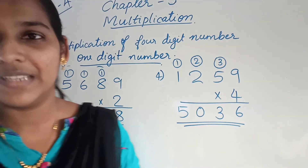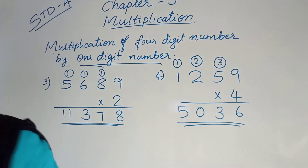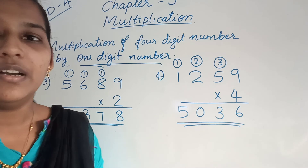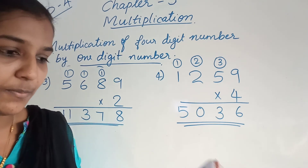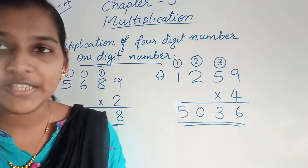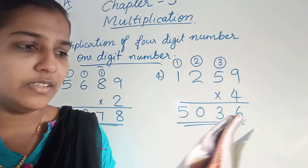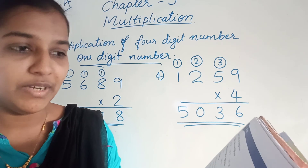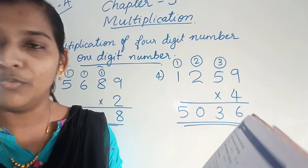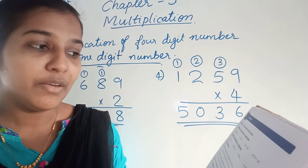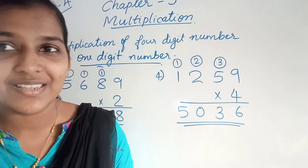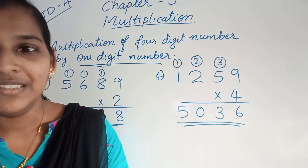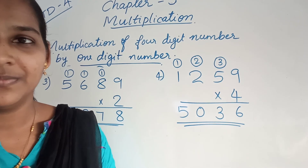This is the way to multiply a 4-digit number by a 1-digit number. Now there are some questions in your textbook on page number 56, question number 2: Multiply a 4-digit number by a 1-digit number. There are parts A, B, C, and D — 4 parts. Everyone answer all those questions in your notebook. That's all for today. Thank you. Bye.